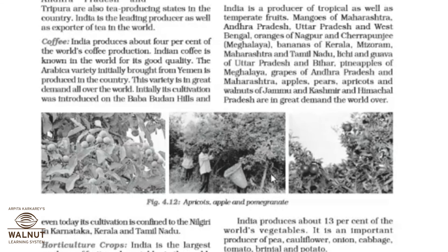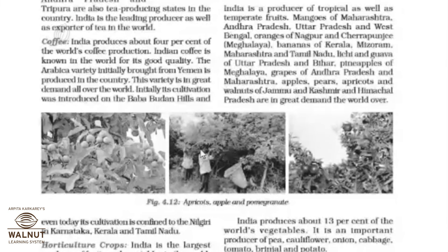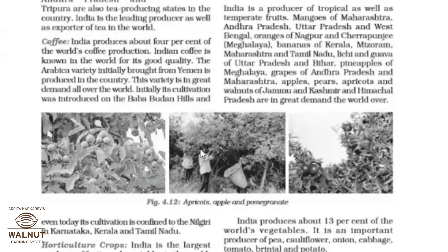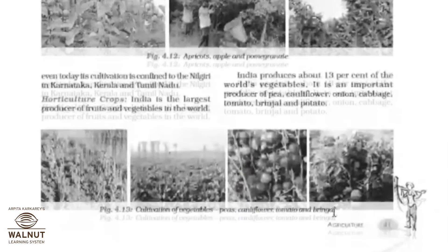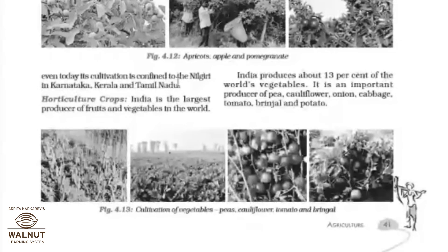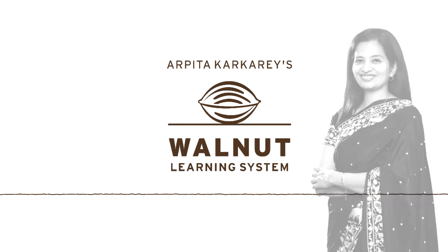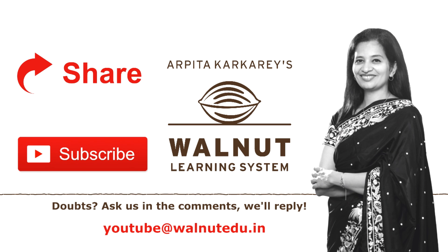Next food crop other than grain is coffee. India produces about 4% of the world's coffee production. Indian coffee is known worldwide for its good quality. Initially, its cultivation was introduced by the Baba Budan Hills, and even today its cultivation is confined to the Nilgiris in Karnataka, Kerala, and Tamil Nadu. If you like our videos, do share them and subscribe to our channel. Keep watching and keep learning.